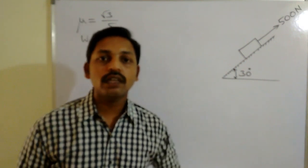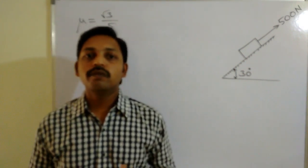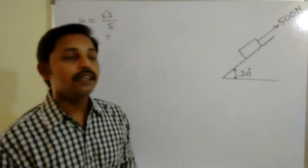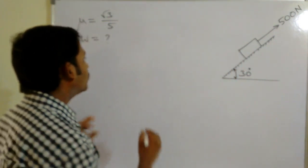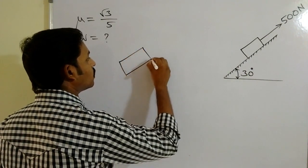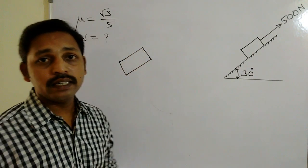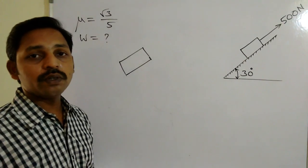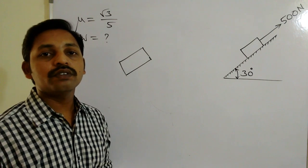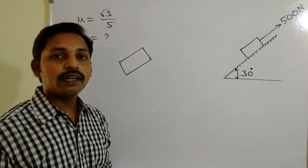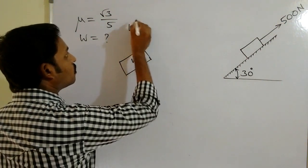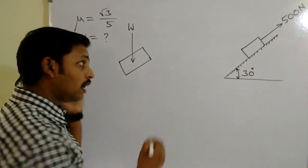First, draw the free body diagram. The first thing to remember while drawing a free body diagram is to remove all the surface contacts and draw the block separately. Once the block is drawn separately, the first force to represent is the weight, which always acts vertically downwards — whether the block is on a horizontal, vertical, or inclined plane.